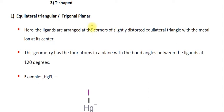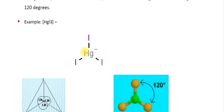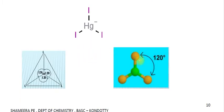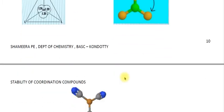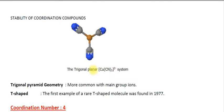For trigonal planar geometry, the ligands are arranged at the corners of a slightly disordered equilateral triangle with the metal ion at its centre. This geometry has four atoms in a plane with bond angles between the ligands at 120 degrees. An example is [HgI₃]⁻. Another representation is the trigonal planar geometry of [Cu(CN)₃]²⁻.